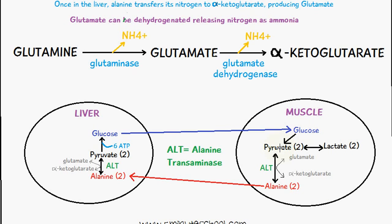In the diagram: glucose in the muscles is converted into pyruvate. Pyruvate is converted into alanine via ALT, which is alanine transaminase, and then transported to the liver where alanine is converted back into pyruvate, which can then be converted back into glucose. The important step is the conversion of glutamate into alpha-ketoglutarate — NH4+ is added on at one stage and removed at the other.